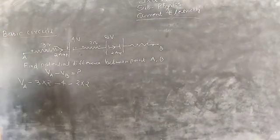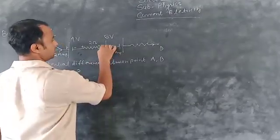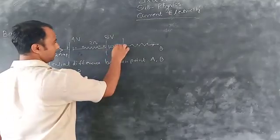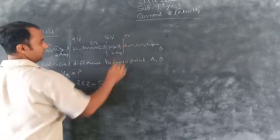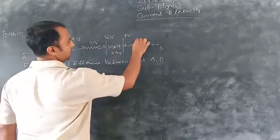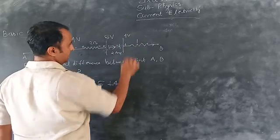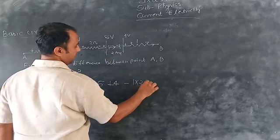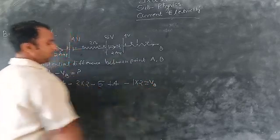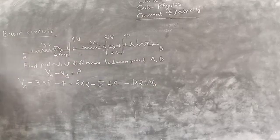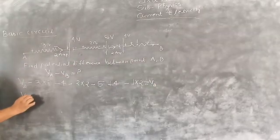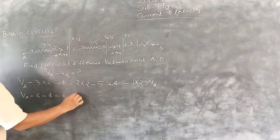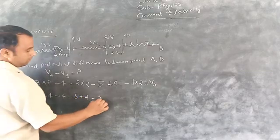Current is going in such a direction that this terminal is positive and this is negative, and minus from the resistor. After this, positive is plus and negative is minus — this is plus 4 volts. This is 1 ohm resistor, and this is plus and this is minus — minus 1 into current here. We place the potential equal to B. So we write the basic equation: V_A minus 6 minus 4 minus 5 plus 4 minus.